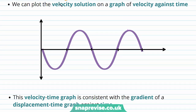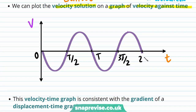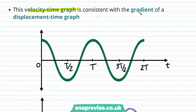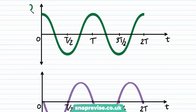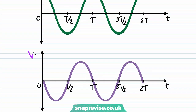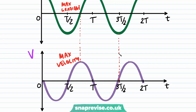We can plot this velocity solution on a graph of velocity against time. This is a minus sine graph, as we see in the equation — velocity is proportional to minus sine of omega times t. This velocity-time graph is consistent with the gradient of a displacement-time graph. At the point of maximum gradient on the displacement-time graph, we have the maximum velocity of the body, and at a point of zero gradient, we have a point of zero velocity.